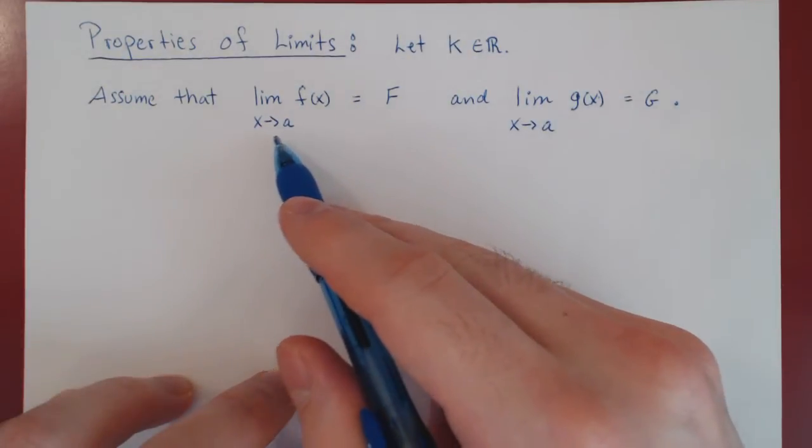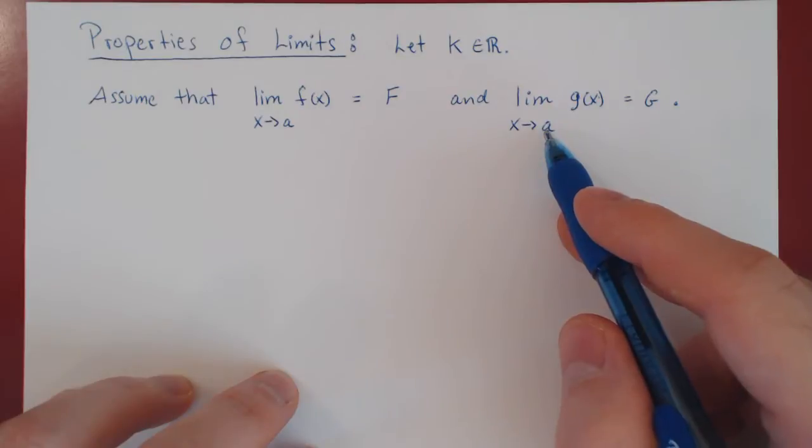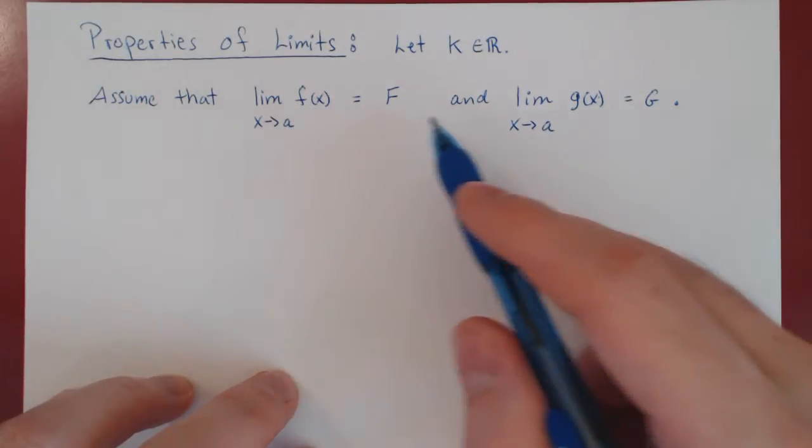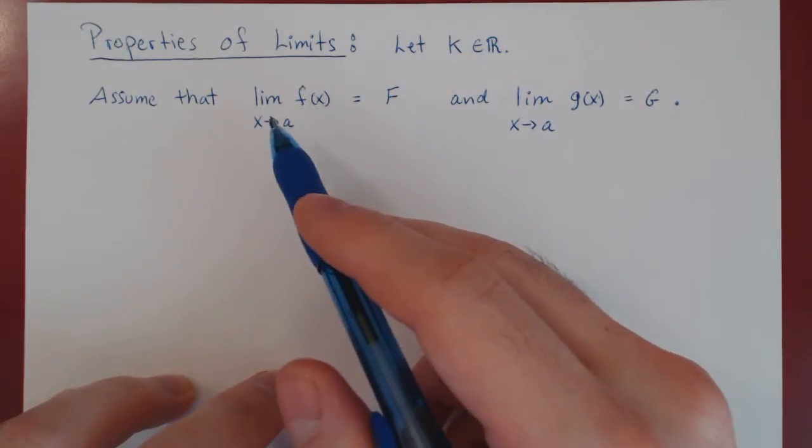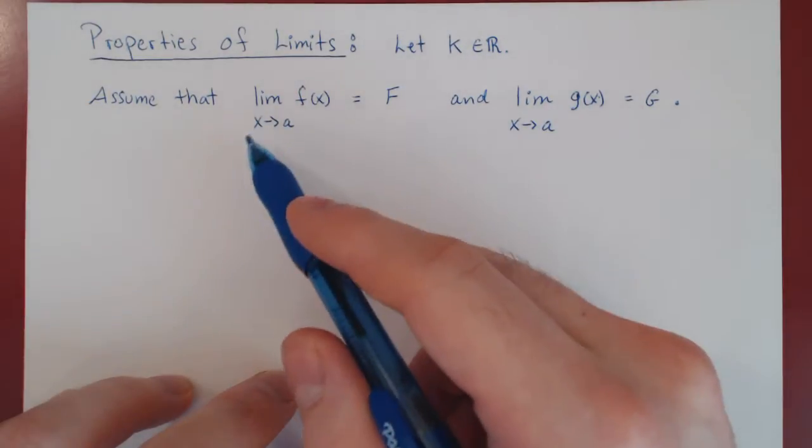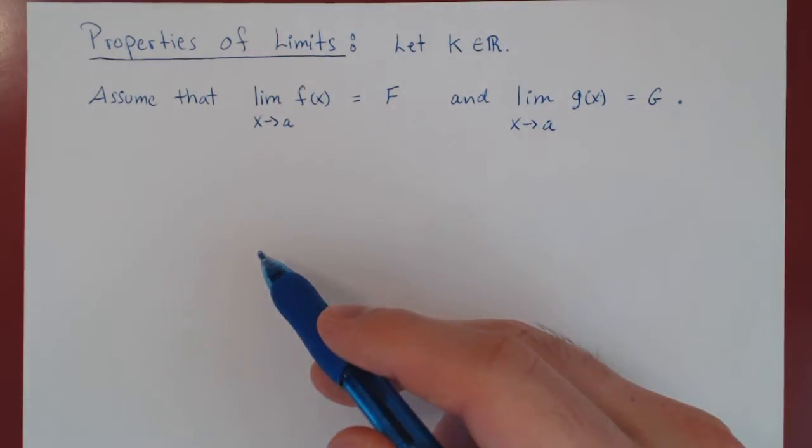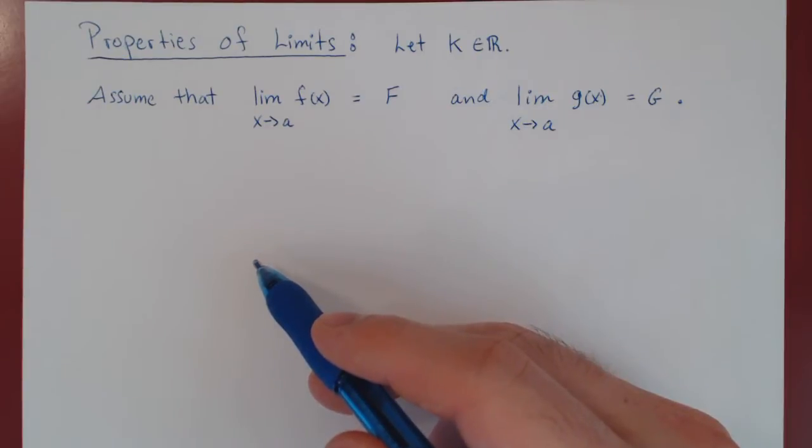Now we're using here two-sided limits. The same would hold true if we had limits from the left or limits from the right. We'll only write the properties in the case of a two-sided limit, but keep in mind that everything works for one-sided limits as well.